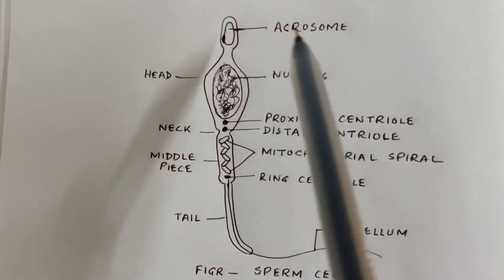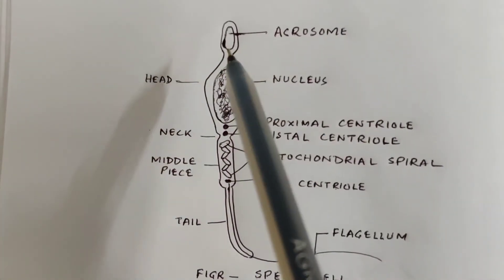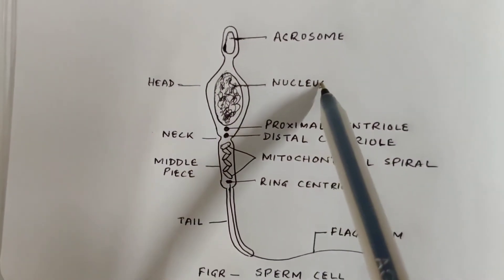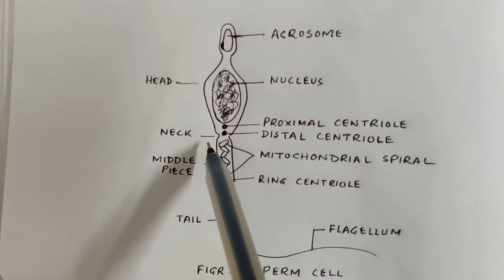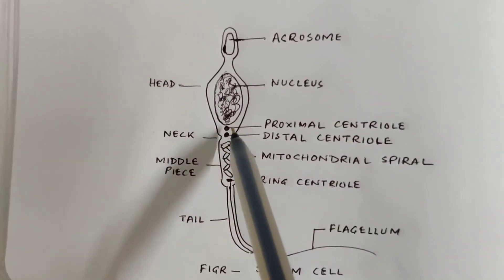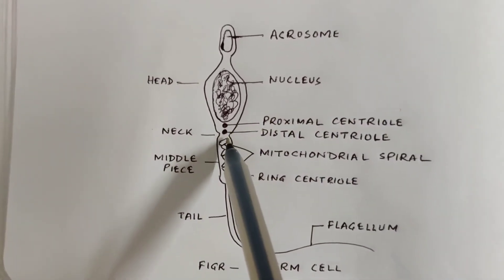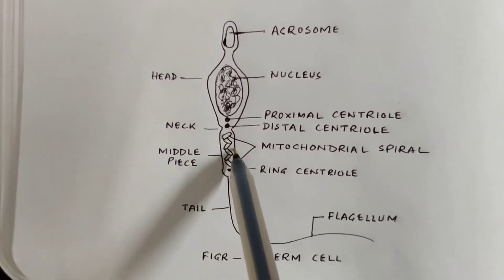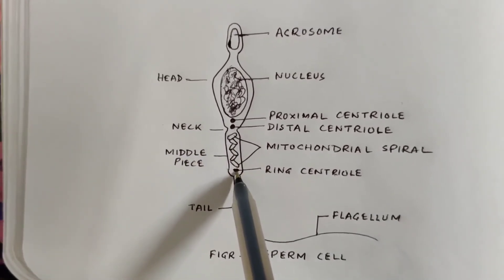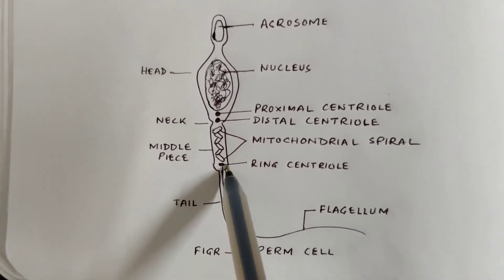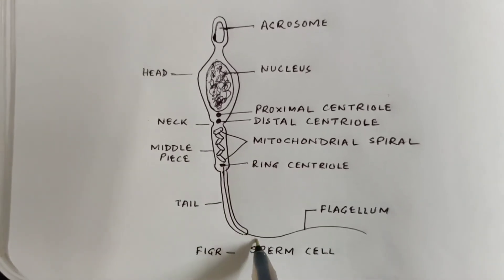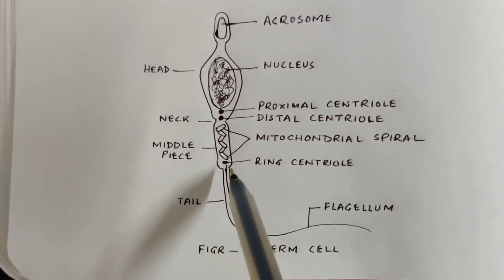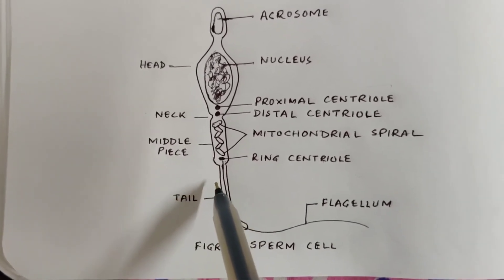This section is about the reproductive system in humans, concerned with the male reproductive system. This part is known as the acrosome. This is the head containing the nucleus. This is the neck, which contains two centrioles — the proximal centriole and the distal centriole. This is the middle piece, which contains the mitochondrial spiral that provides energy to the sperm. There is also a ring centriole from which the flagellum develops. This is the tail part, which contains the flagellum and the axial filament.